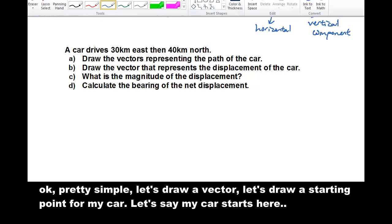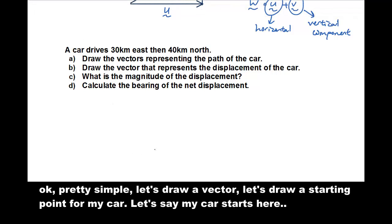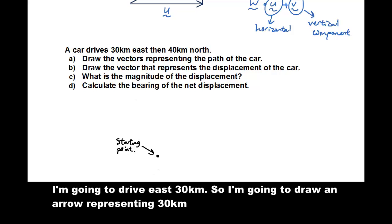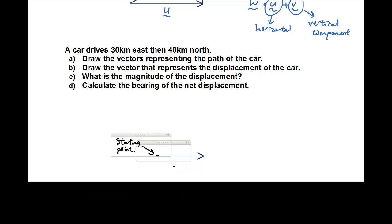I'm going to draw the vector. So let's say my car, let's draw a starting point for my car. So let's say my car starts here. Okay, this is the starting point of my car. Starting point. My car. And I'm going to drive east 30 kilometers. So I'm going to draw an arrow east 30 kilometers.